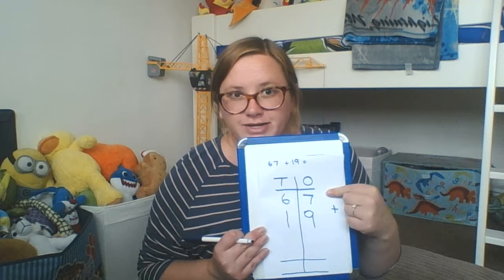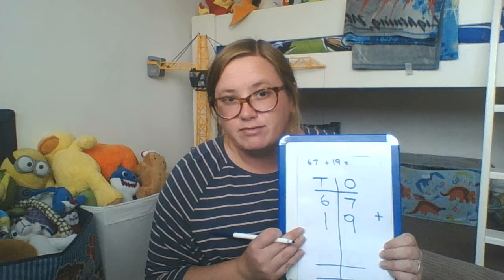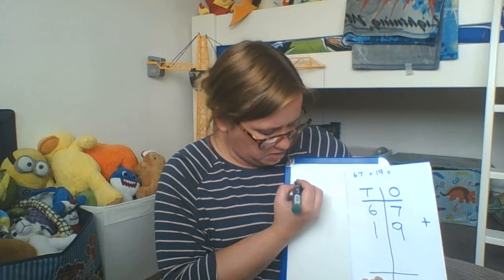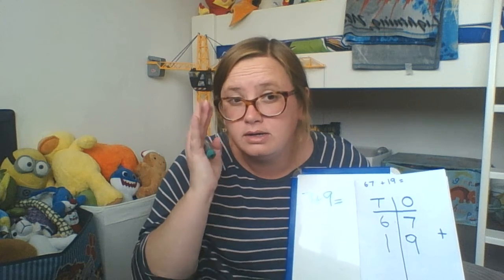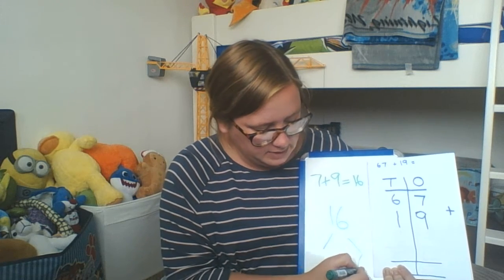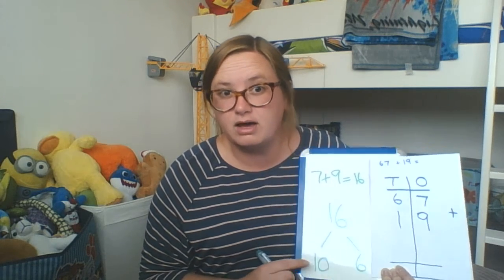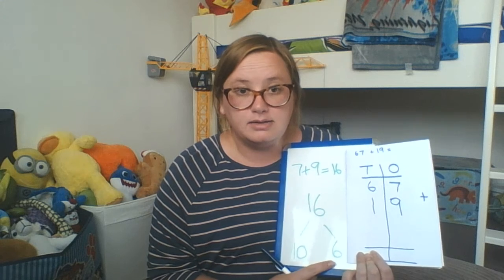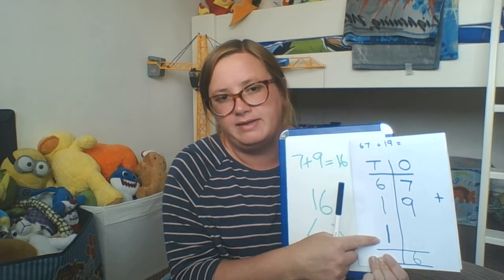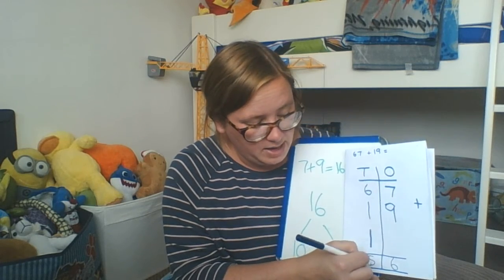Starting in our ones column — furthest to the right — we have got 7 plus 9. 7 plus 9 equals more than the 9 we're allowed in here before it turns into a 10. So 7 plus 9 equals 16. For the number 16 we've got 6 ones, and then we can make one 10 out of that. So I'm going to take the 6 ones and pop them in my ones column, and then take this 10 and add it to my tens column. So I've got 6 tens add 1 ten add another 10 — that's 8 tens — which makes my answer 86.